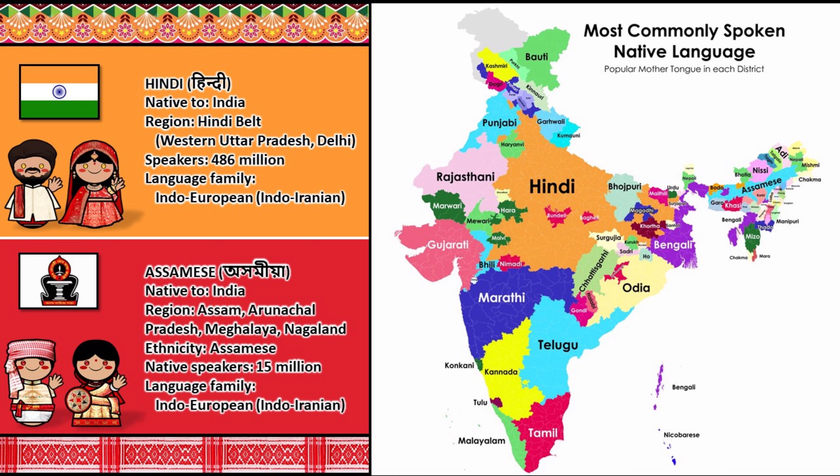Assamese is an Indo-Aryan language spoken primarily in the northeastern Indian state of Assam, where it is an official language and serves as a lingua franca for the region. It has over 15 million native speakers. Assamese-based creoles include Nefamese and Nagamese.